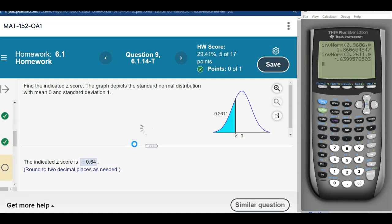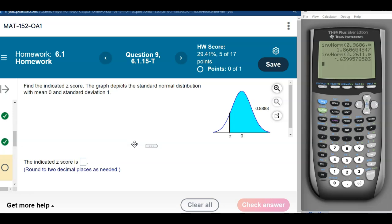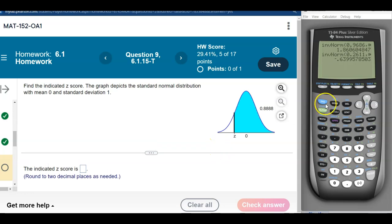All right, so area to the left, no problem. That's what inverse normal is for. Now, what if it's the area to the right? So the blue region is shaded to the right of the number that I'm looking for. So it's no longer just the inverse normal as it is designed.